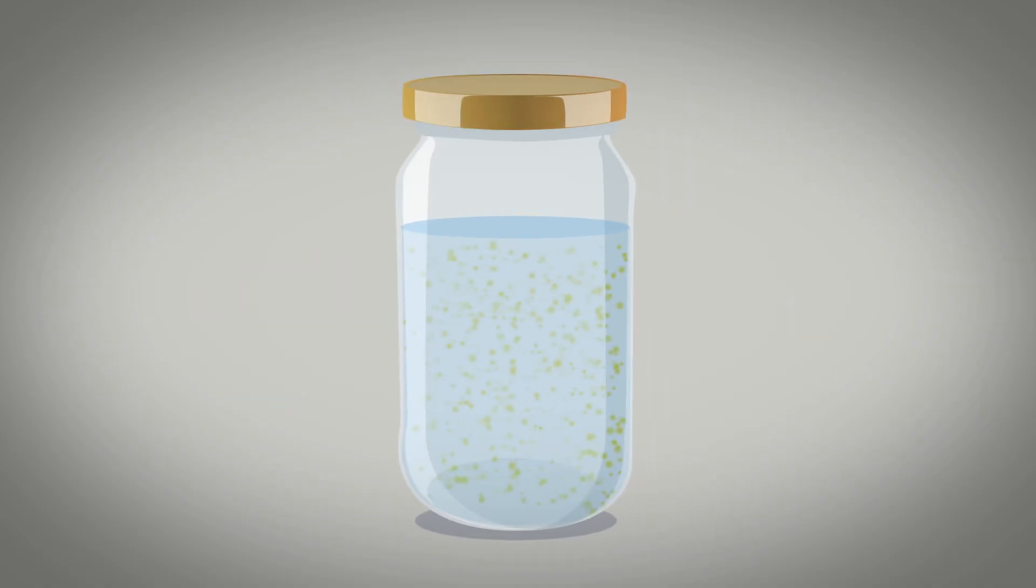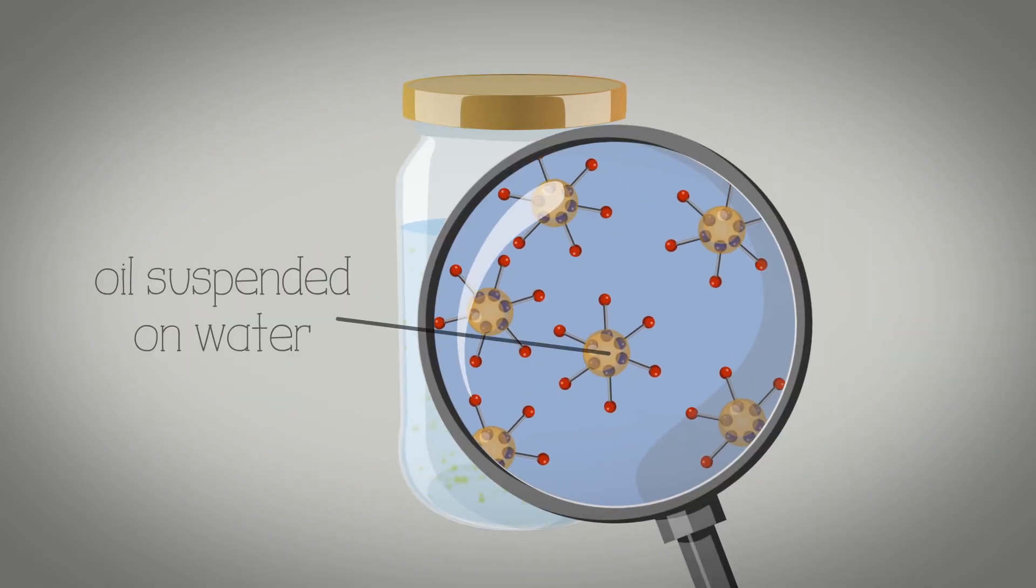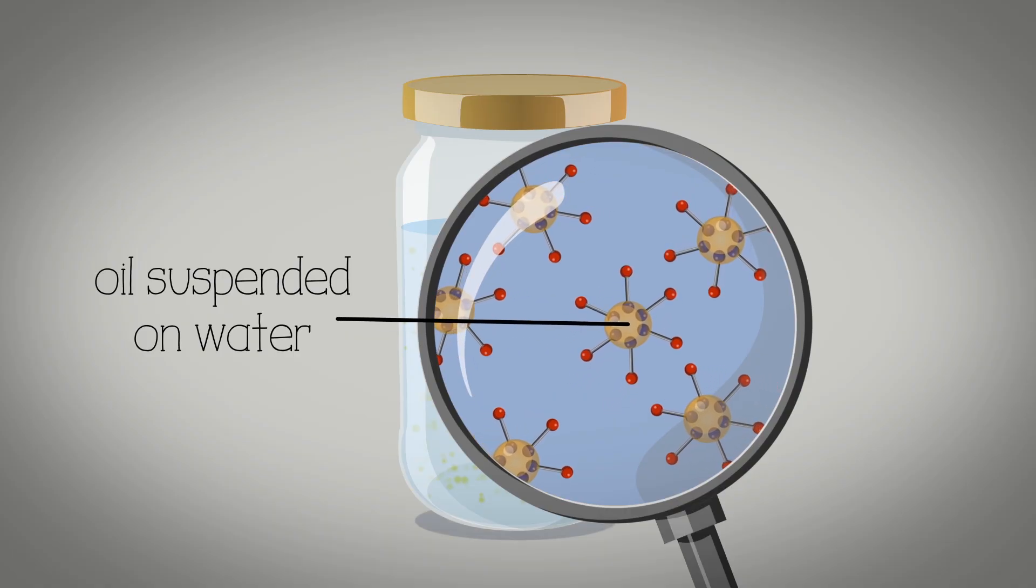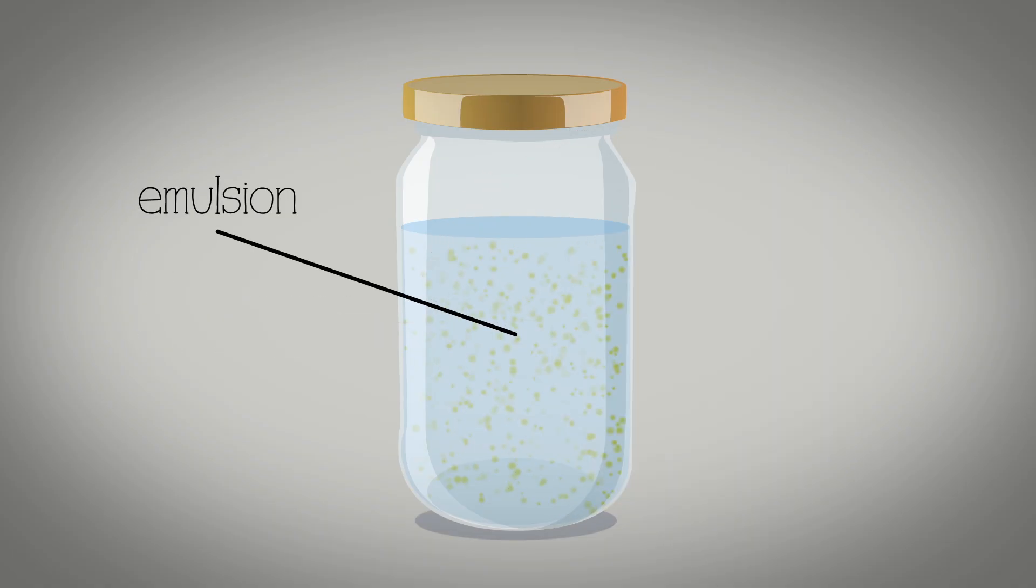When an emulsifier is added to a mixture of oil and water its molecules arrange themselves so that they prevent the oil and water from separating like this. The mixture has now become an emulsion.